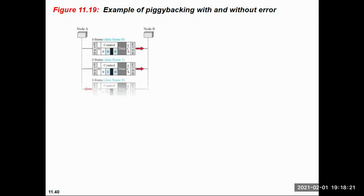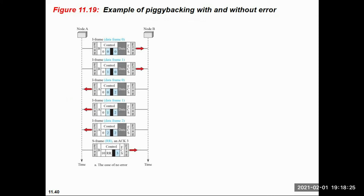Now we will see an example showing two exchanges using piggybacking. In this case, information frames 0 and 1 are sent from node A to node B. Since the I-frame is used for transporting data and acknowledgement, acknowledgement of frames 0 and 1 is received along with frame 2. Then an S-frame acts as a final acknowledgement sent from node A to node B. This is the case where no error has occurred.